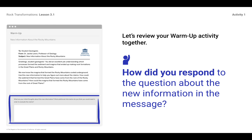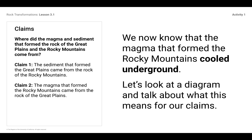In class we talked about — just a reminder because it's been a little bit — Claim Number One said sediment that formed from the Great Plains came from the rock of the Rocky Mountains. So we know that there was Rocky Mountains first, then there was weathering, and that created sedimentary rock when that sediment compacted and cemented.